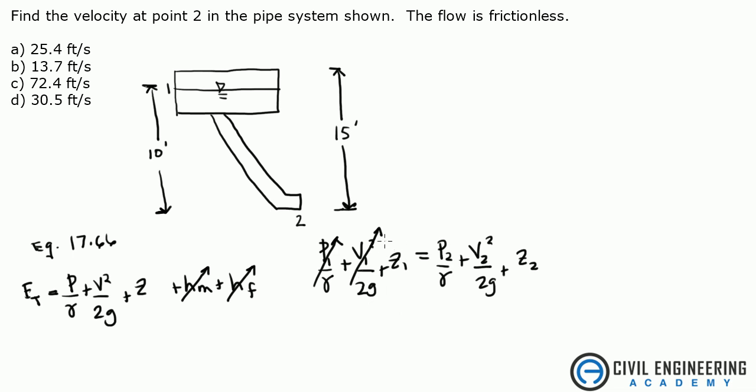So your velocity is 0, but your elevation is still there. The pressure at 2 is going to be 0 as well.